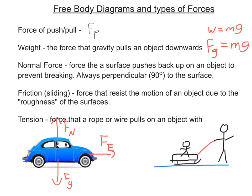If there were no normal force, the car would accelerate downwards, the road would break, and we'd all be heading toward the center of the Earth. Friction is the force that resists the motion of an object due to the roughness of surfaces. We'll deal with what causes friction and how to calculate it in the next lesson.